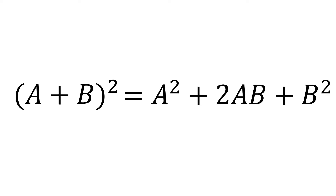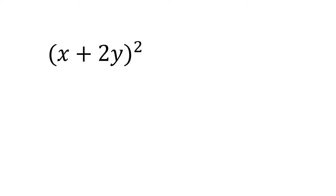Now using this formula, we can quickly find the square of the sum of two terms without using the FOIL method or the distributive property in general. For example, let's say we have (x + 2y) squared.